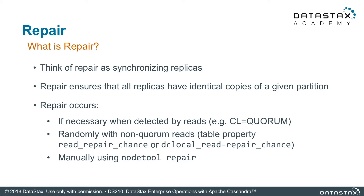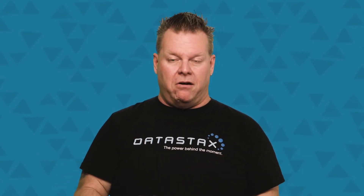When does repair occur? There are a few ways. First, you can explicitly run a repair using the nodetool repair command. Second, during a read operation at quorum, if inconsistency is noticed, it will rectify that with a repair. And if you're using a consistency level of one, there's something called read repair chance — by default, ten percent of reads at consistency level one will trigger a repair. You can bring it up or turn it off, but usually the default is fine.